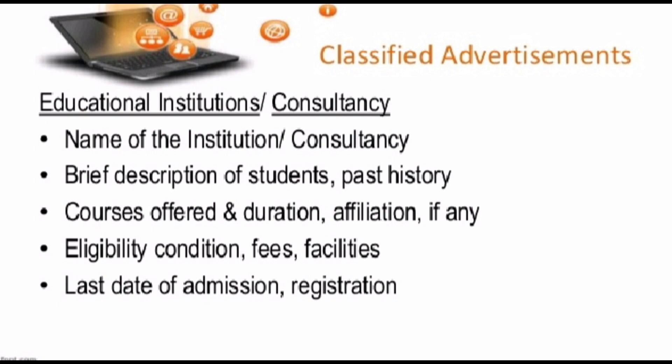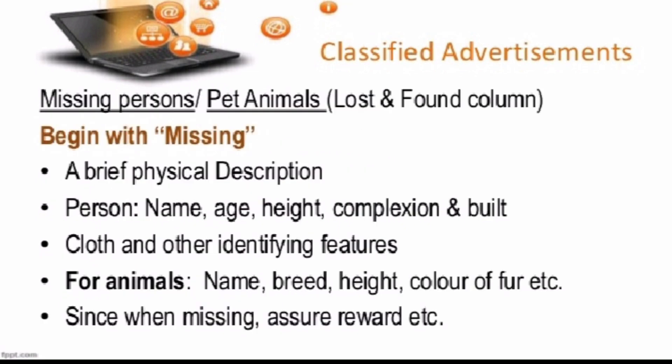If you are looking to place an advertisement for a missing person, pet or animal under the lost and found column, begin with 'Missing'. Include a brief physical description: person's name, age, height, complexion and build, clothing and other identifying features. For an animal, mention name, breed, height, color or fur. Also mention since when they have been missing and assure a reward.